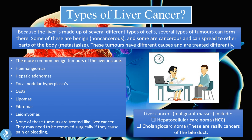The benign tumors of the liver include hemangiomas, hepatic adenomas, focal nodular hyperplasias, cysts, lipomas, fibromas, and leiomyomas. None of these tumors are treated like liver cancer; they may need to be removed surgically if they cause pain or bleeding.